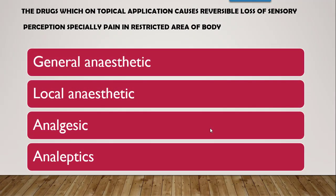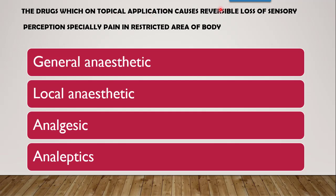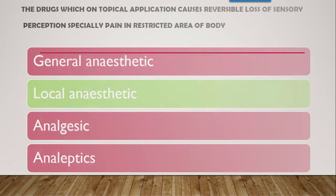The first question: the drug which on topical application causes reversible loss of sensory perception, especially pain, in a restricted area of the body — that means sensation is lost by topical application or injection. General anaesthetic is not the answer because they depress CNS. Local anaesthetic — yes, it is restricted to a particular area. Analgesics are simply painkillers, not restricted to any particular area. Analeptics are stimulants. So the correct answer is local anaesthetics.